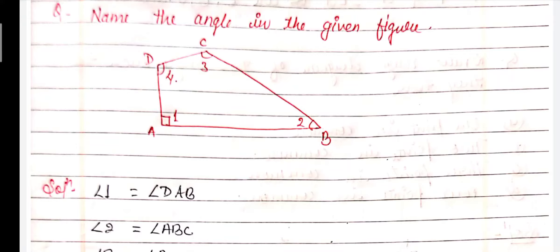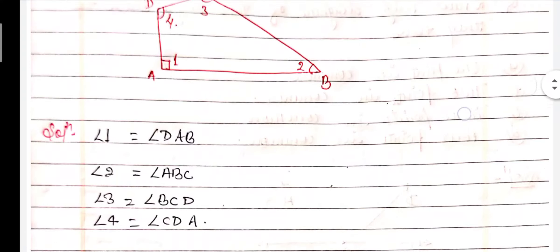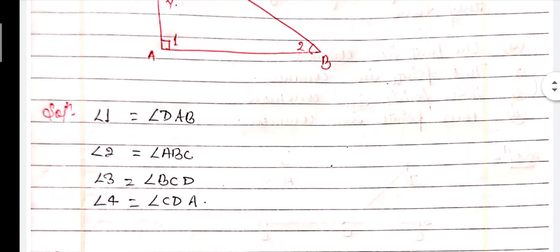Now let us see Angle 3. Angle 3 is formed by two arms, CD and CB. C is the vertex and CB are the arms. So Angle 3 is equal to Angle BCD. Similarly, Angle 4 is equal to Angle CDA, because D is the vertex and we write D between A and C. I hope question number 1 is clear to all.